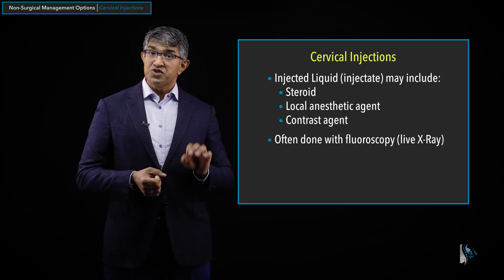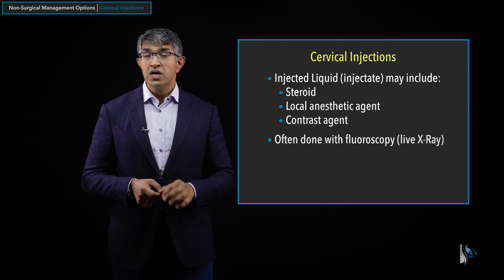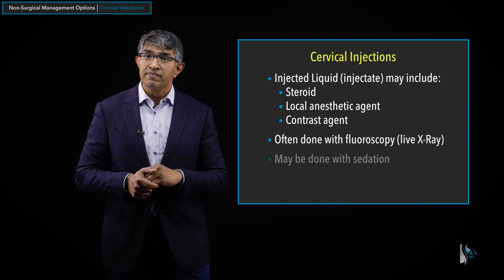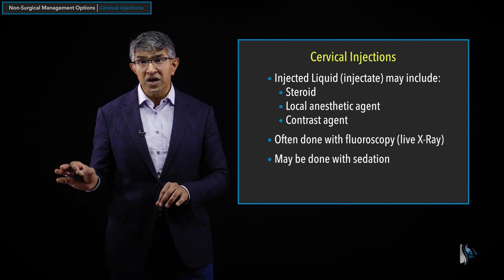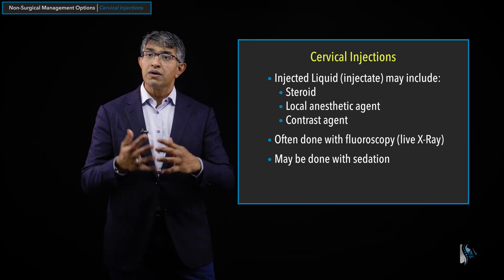Most of the time, injections are done with fluoroscopy — an x-ray machine that allows live imaging. As they put the needle in, they can see where the needle is going, verify they're in the right spot, inject the liquid, and see where the liquid has gone. That is valuable to ensure the injection is placed correctly. Sometimes they will do it with sedation — some people are very anxious and light sedation can be given. The constraint is that if you get sedation, somebody needs to drive you there and back. That's something to discuss in advance with the interventionalist.